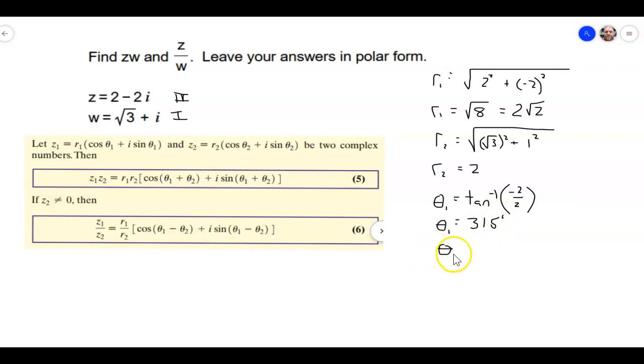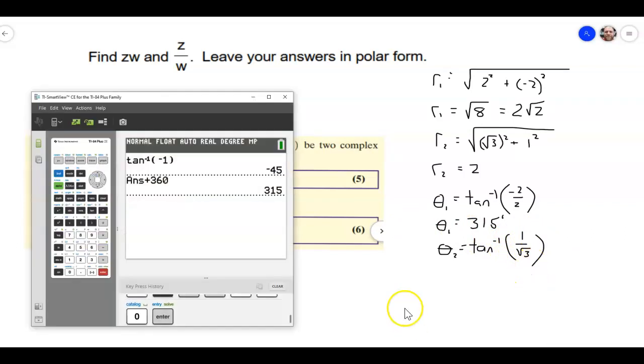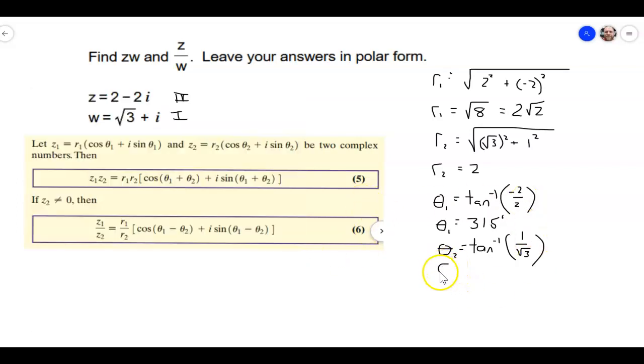All right, to find the theta 2, I'm going to do the same kind of thing. So this is the inverse tangent of 1 over root 3. And once again, I can do this if you don't want to use your circle and do a little bit of a couple of computations there. We can just do second inverse tangent of 1 divided by the square root of 3. And I get 30 degrees. So theta 2 is equal to 30 degrees.